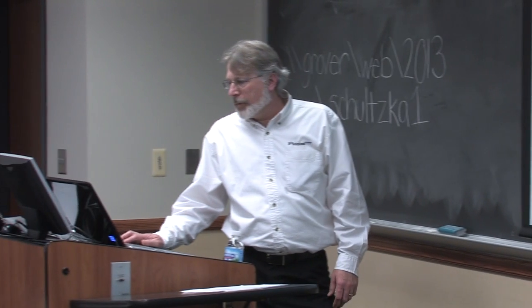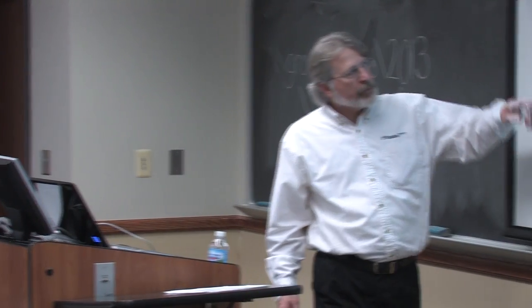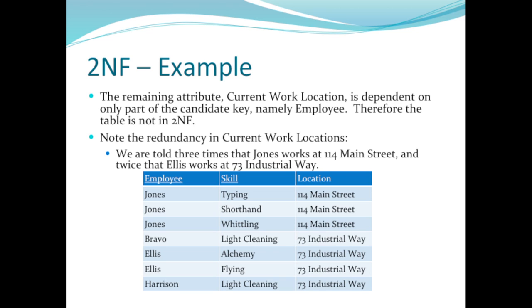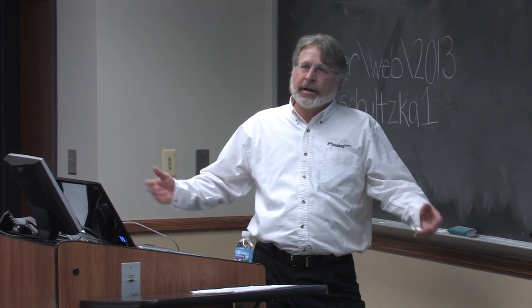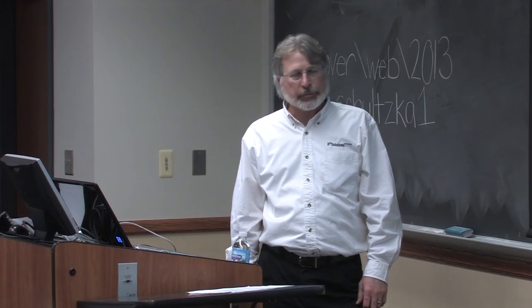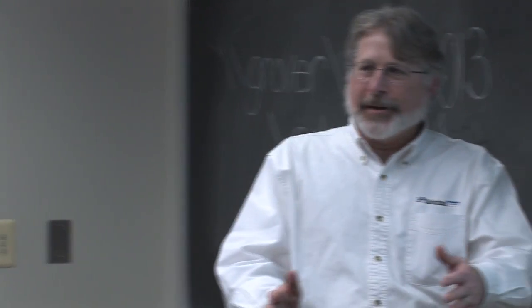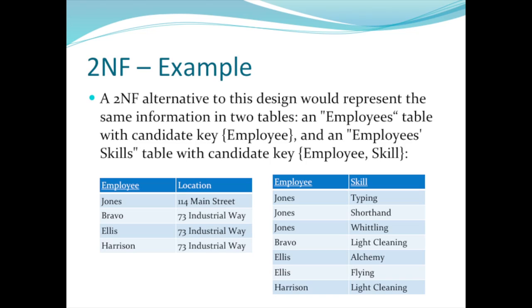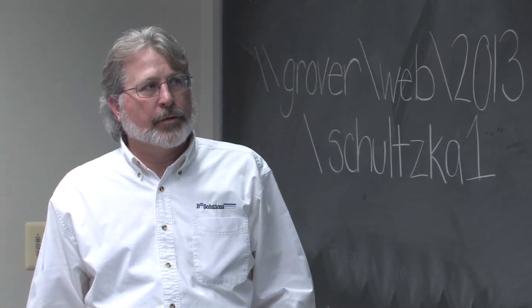But that still didn't solve our problem in the second normal form, because the location itself is really more dependent on the employee than it is on the skill. So by itself, this table still lacks the second normal form. Again, each form tells you to take the problem data out and move it into another table on its own. So that's what we did here — we took all the skills out because the location didn't basically relate back to the skill. We pulled the skills out. Now you've got employee and location, and then you've got all your skills over here by employee. Now that basically gets you to second normal form.